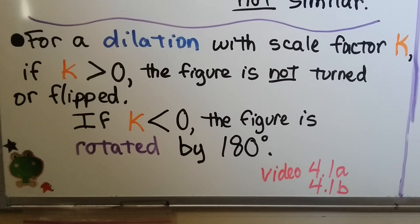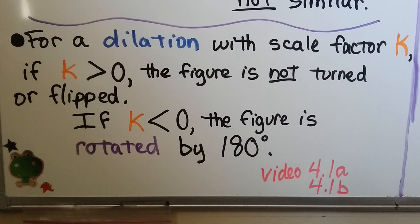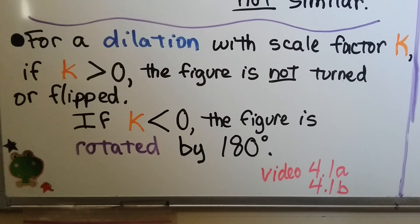For a dilation with scale factor k: if k is greater than zero, the figure is not turned or flipped. If k is less than zero, the figure is rotated by 180 degrees — so that would be like if it was a negative. We learned about that back in video 4.1a and 4.1b, with links in the description if you need them.